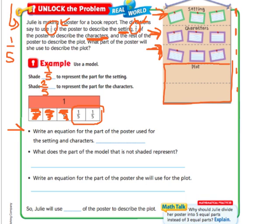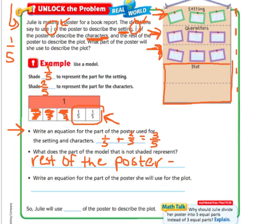But let's fill out this information. Let's write an equation for the part of the poster used for the setting and characters. So I started with one-fifth for the setting and then I added two-fifths for the characters for a total of three-fifths altogether. What does the part of the model that is not shaded represent? So these empty spaces over here, that's going to be the section for the rest of the poster, which we know is supposed to be for the plot. So now write an equation for the part of the poster that she will use for the plot.